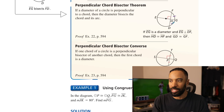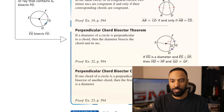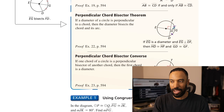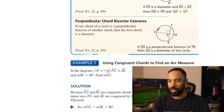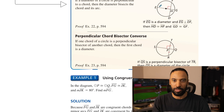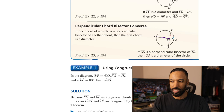That also means the arcs are congruent. EG is bisecting arc FD, which makes those things congruent. When you have something perpendicular to a chord that makes up that arc, it is bisected — the entire arc is bisected. Perpendicular Chord Bisector Converse: if a chord of a circle is the perpendicular bisector of another chord, then that first chord is a diameter.